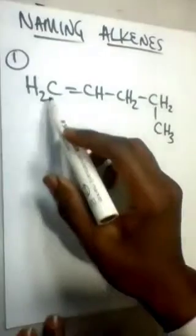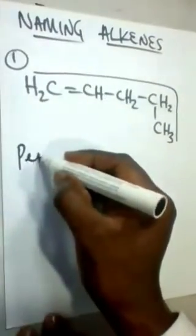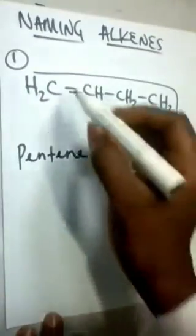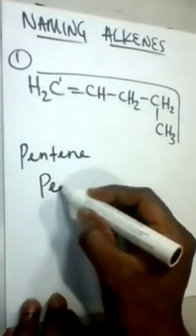Let's look at this compound. The carbon atoms are arranged with the double bond on the first carbon. Identify the longest chain — if we draw a straight line and bend it at the end, we get five carbon atoms. So this is pentene. The double bond is on carbon number one, therefore it is pent-1-ene.